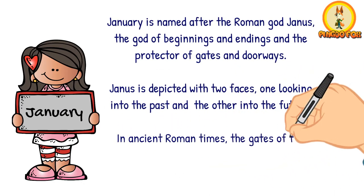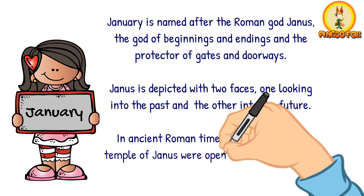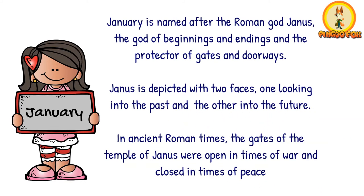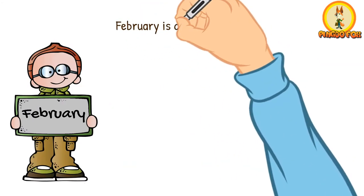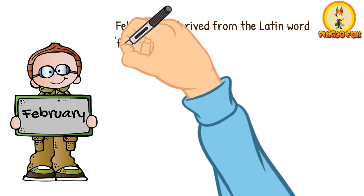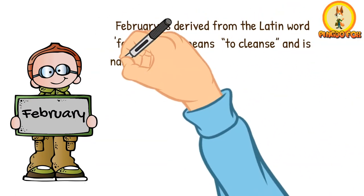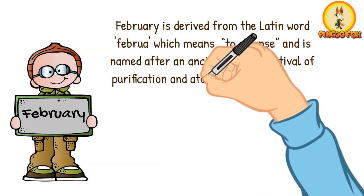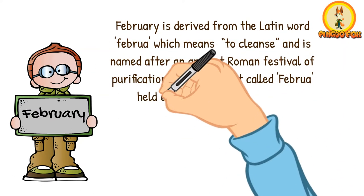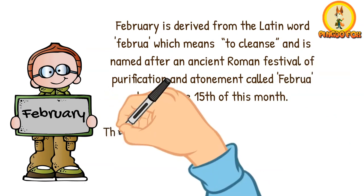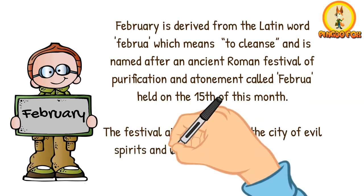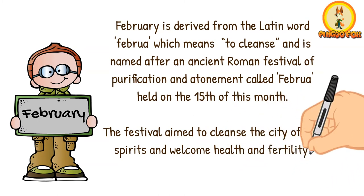In ancient Roman times, the gates of the Temple of Janus were open in times of war and closed in times of peace. February is derived from the Latin word "februa," which means to cleanse, and is named after an ancient Roman festival of purification and atonement called Februa, held on the 15th of this month. The festival aimed to cleanse the city of evil spirits and welcome health and fertility.